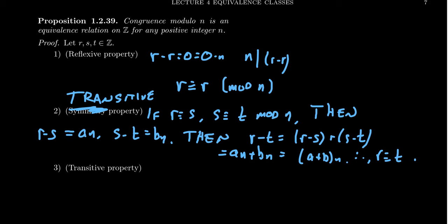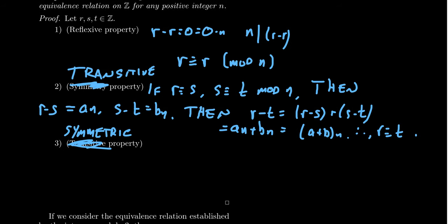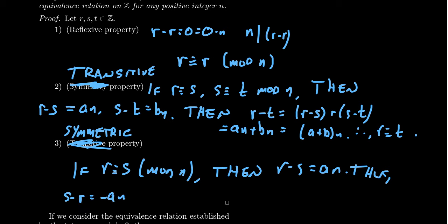Now let's do the symmetric one. The order doesn't actually matter. Typically, people do reflexive, symmetric, and then transitive. But maybe the symmetric property is harder than the transitive property - I don't think that's the case here. To show the symmetric property, you only have to make one assumption: assume R is congruent to S mod N. That implies that R minus S equals A N. That's going to imply that S minus R is equal to negative A times N.